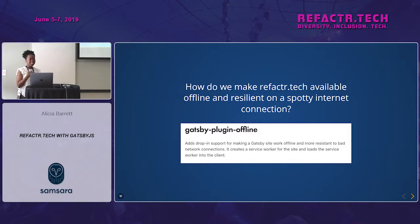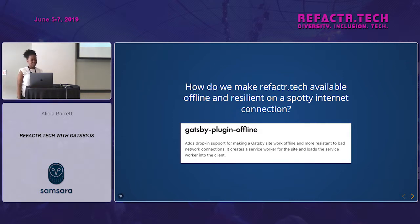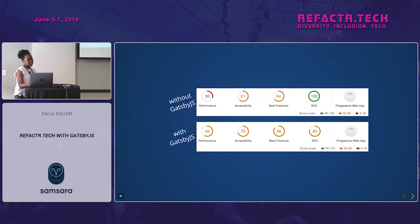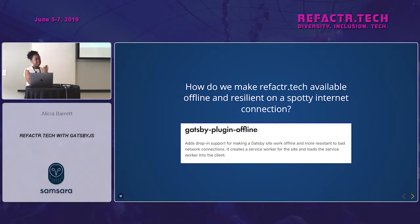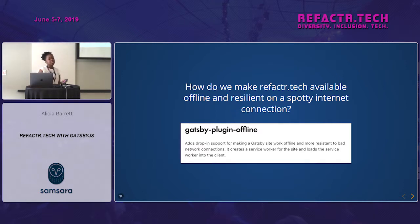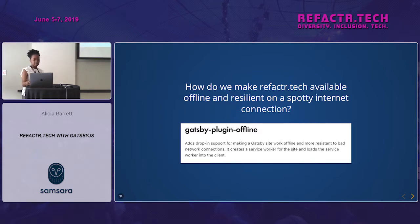How do we make refactor.tech more resilient on a spotty internet connection? We can use the gatsby-plugin-offline. This improves performance and best practices and takes steps toward qualifying as a progressive web app. What it does is implement a service worker. Your browser has a cache interface that stores information about sites you visit, and a service worker uses that cache interface to define what an offline experience might look like — so just by using gatsby-plugin-offline, we can take advantage of that capability.